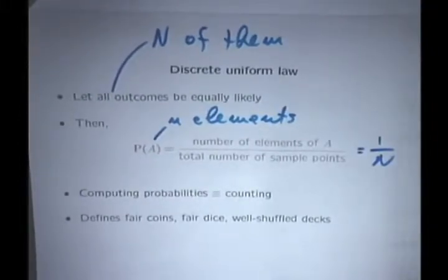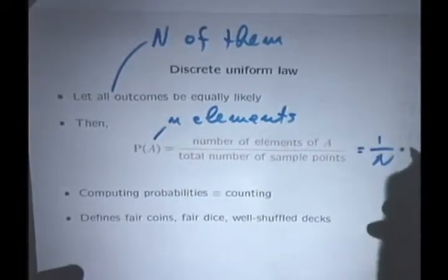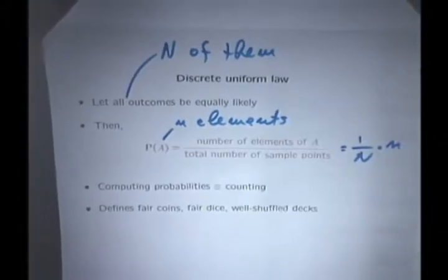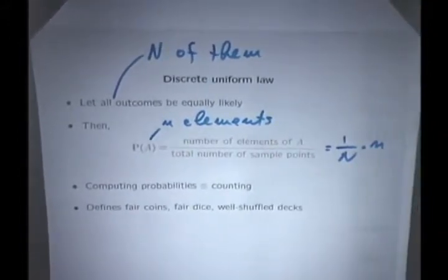And for probabilities to add up to 1, each one must have this much probability, and there's little n elements. That gives you the probability of the event of interest.